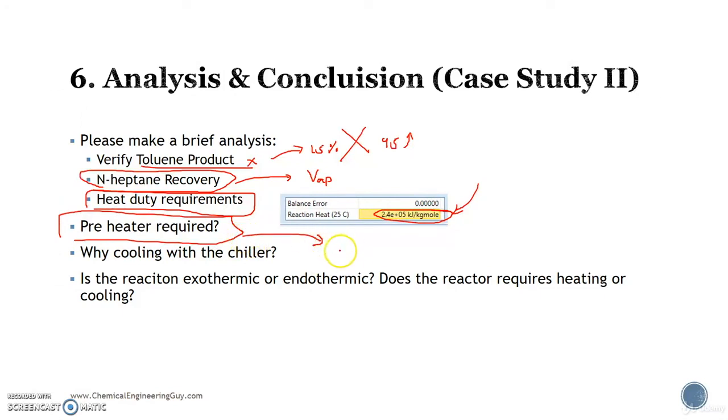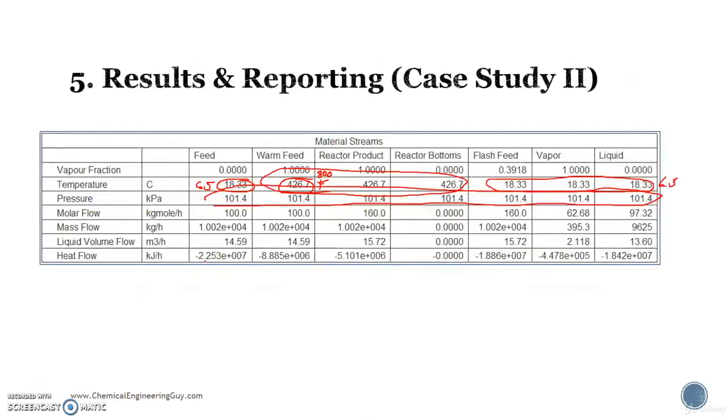Why do we need the preheater? In order to maybe favor the reaction. Imagine that the reaction only takes place at 500 Fahrenheit or even higher. For instance, 800 Fahrenheit will have a high conversion, maybe 15 percent. What if 500 will only have 10 percent? That's why we need high temperature, which is achieved with the preheater.